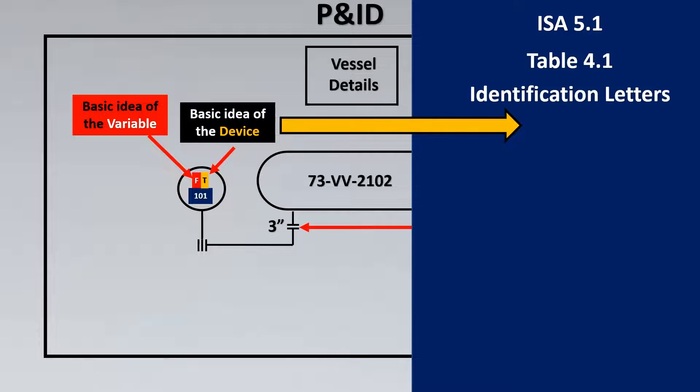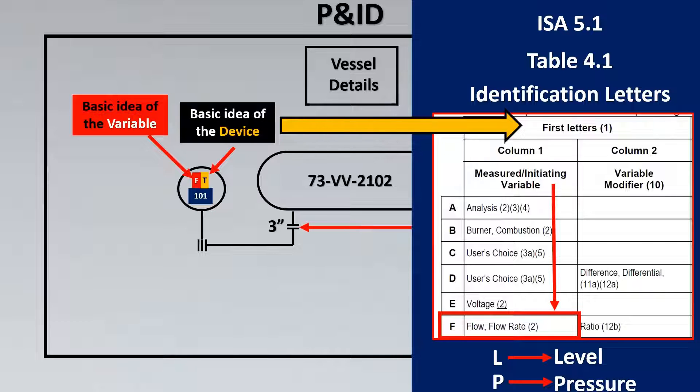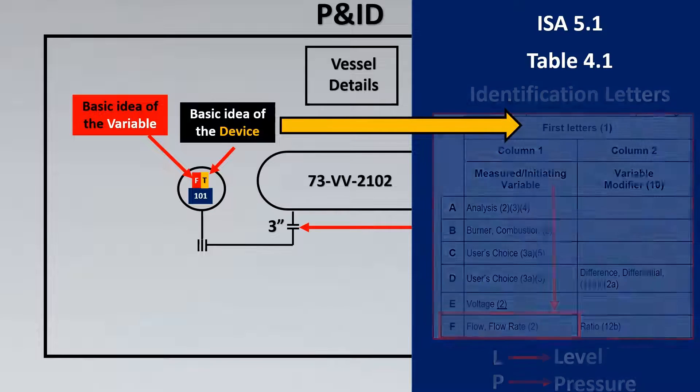For example, let's try to look from ISA perspective that what are these letters standing for. So ISA 5.1 has a table 4.1 which has identification letters for each of these cases. So for example, let's take a small snippet from that. So here's F standing for flow. Similarly you would have L which is standing for level, P which is standing for pressure, T standing for temperature, etc.